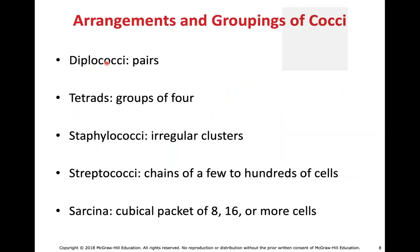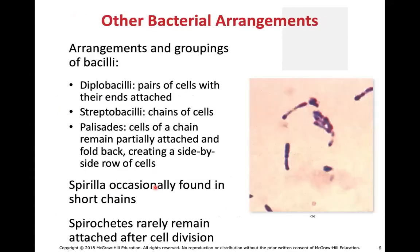For example, staphylococci — just by its name you should know what you're looking at. Staph means clusters and cocci means circles, so if you look at staphylococci under the microscope, you'd expect to see clusters of circles. If you saw a chain of circles, maybe it's a streptococci.